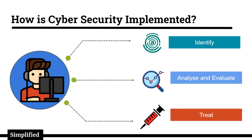How is cyber security implemented? There are numerous procedures for implementing cyber security, but there are three main steps when fixing a security-related issue. The first step is to recognize the problem causing the security issue — for example, we have to recognize whether there is a denial of service attack or a man-in-the-middle attack.